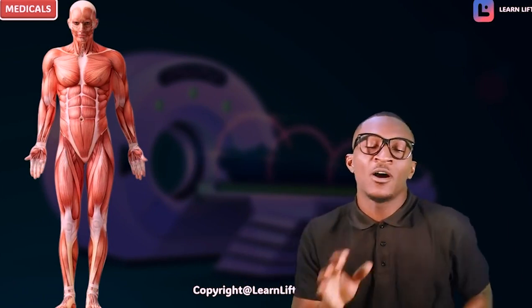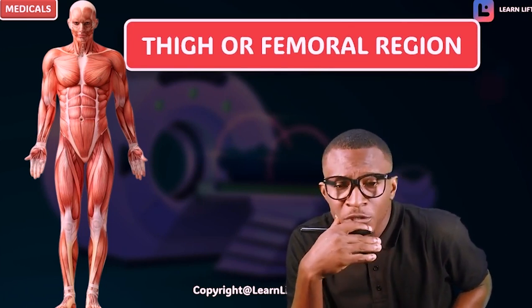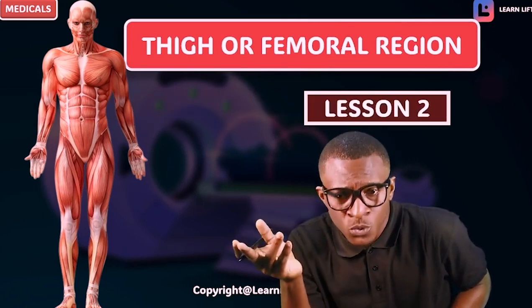Hello guys. In our last class we talked about the glute region — the buttocks, the hip — and we talked about the bones of the glute region. We are still on overview; remember that everything about this chapter is overview. We're going to talk about the regions topic by topic, but now we're just running through an overview. Now let's talk about the thigh, or the femoral region, and that will be our lesson two.